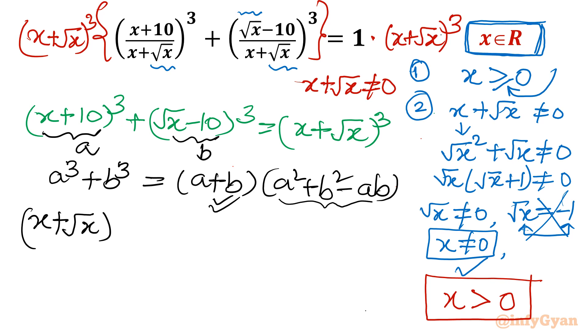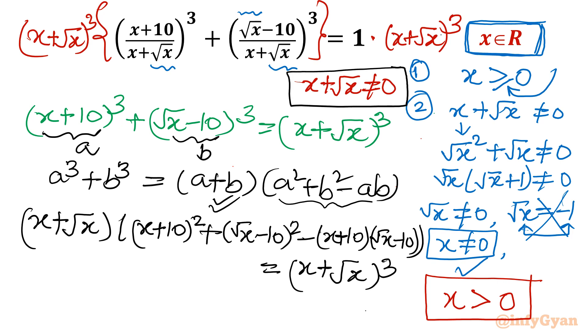So a + b is x + √x. This part is done. Now come to this calculation. a²: (x+10)², plus b²: (√x-10)², minus ab: (x+10)(√x-10). This bracket is done. Left hand side is done. Now right hand side: (x+√x)³. Now you can see, condition x + √x non-zero, so you can easily cancel x + √x from both sides. This term will be over and this power I will cancel by writing over there 2.